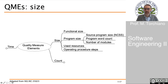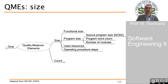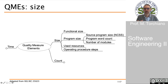Let's start with size. We can count the size of a computing element in terms of functional size — that is, the amount of functions that are required from a software product or that the software product is delivering. The program size is the size of the code, the size of the resources that are used, and the size in terms of operating procedure steps. Let's start from the first possible measurement of size: the functional size.